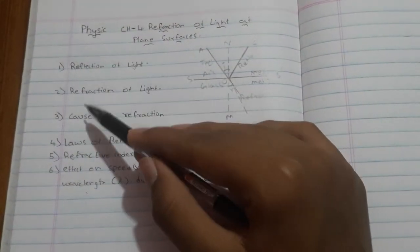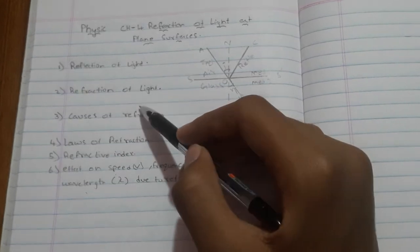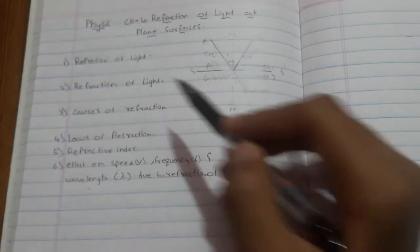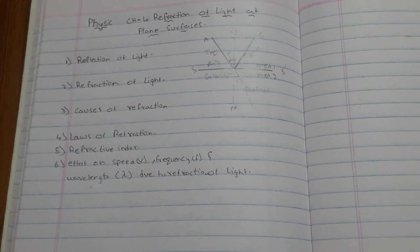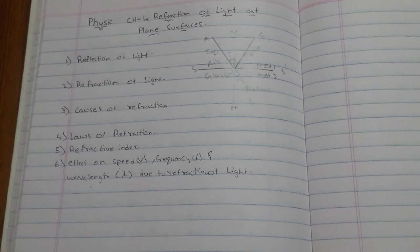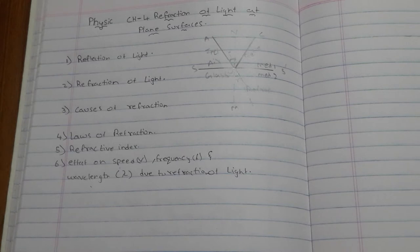Now coming to refraction of light — what do you mean by refraction of light? Refraction means the change in direction of the path of light when it passes from one transparent medium to another transparent medium. Before going into refraction in detail, let me explain reflection a bit more.